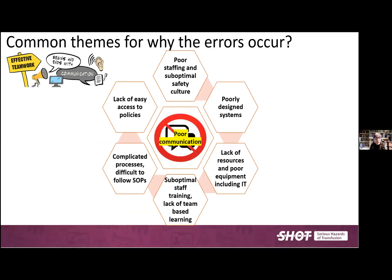When we started collecting this data 10 years ago, we were surprised to find so many issues with transplantation, assuming every hospital carefully produced a timetable of exactly what happened when. Poor communication is a major issue with several contributory factors: poor staffing, poorly designed systems, lack of resources, poor IT equipment, complicated processes, and SOPs that are difficult to follow.